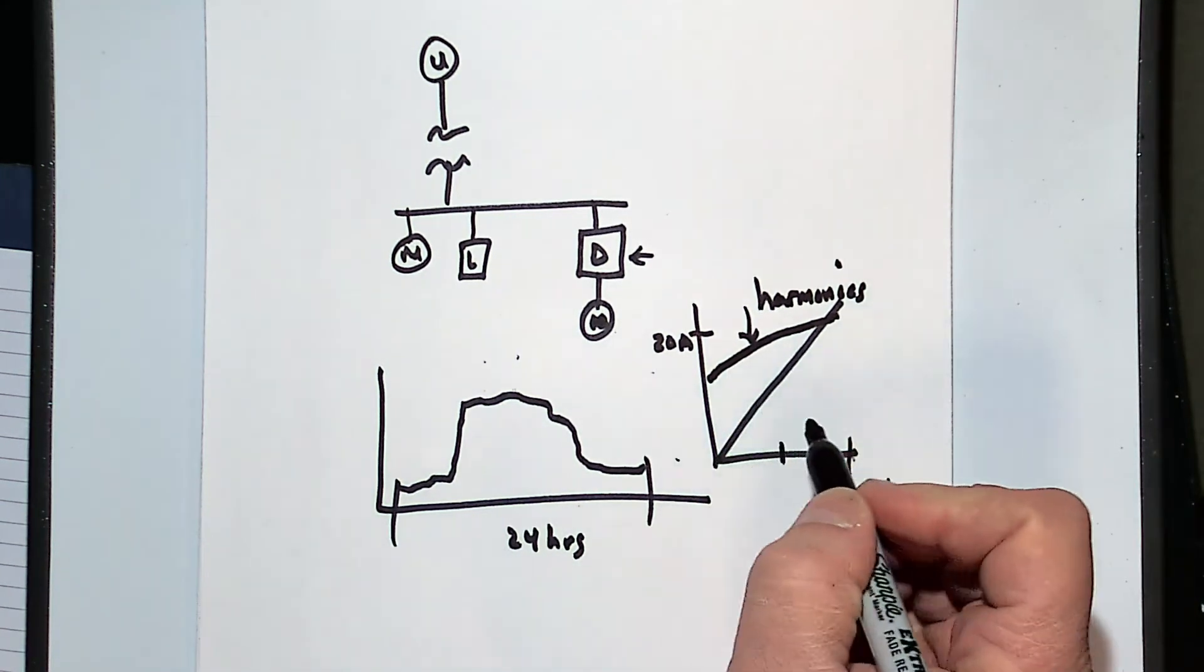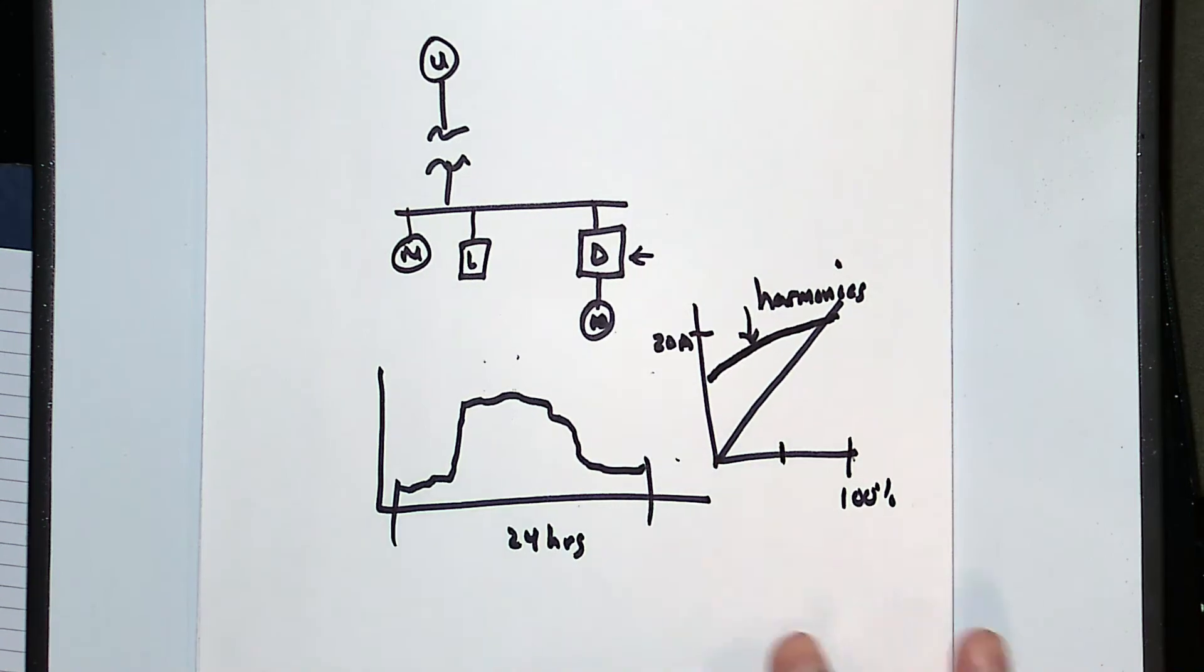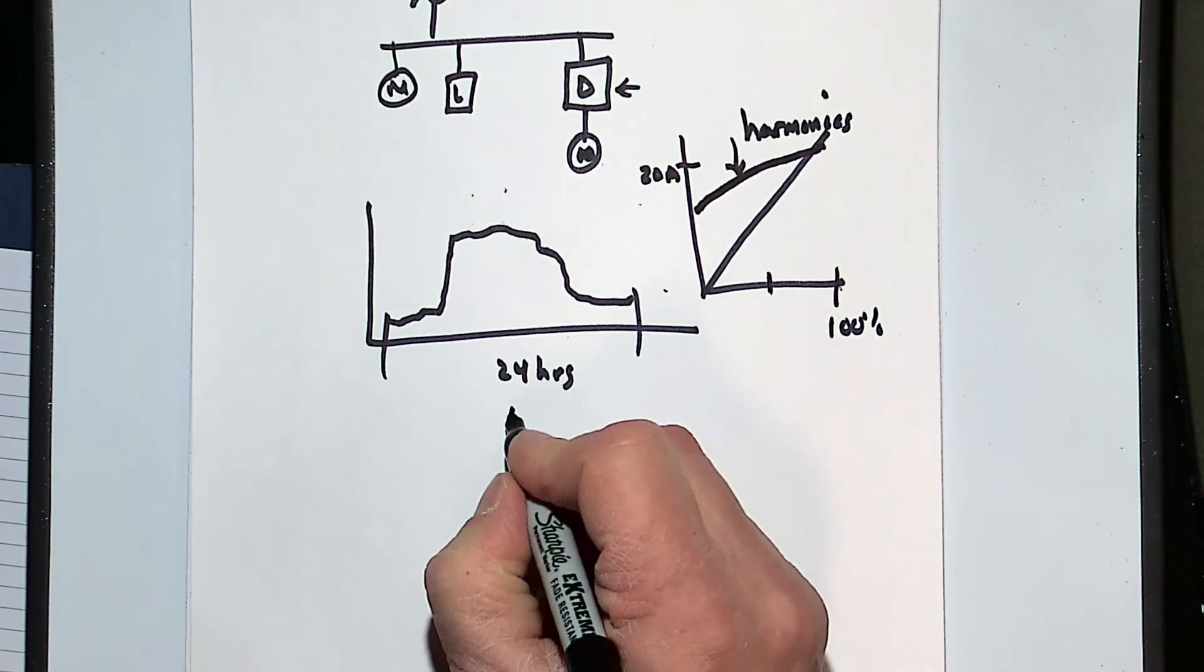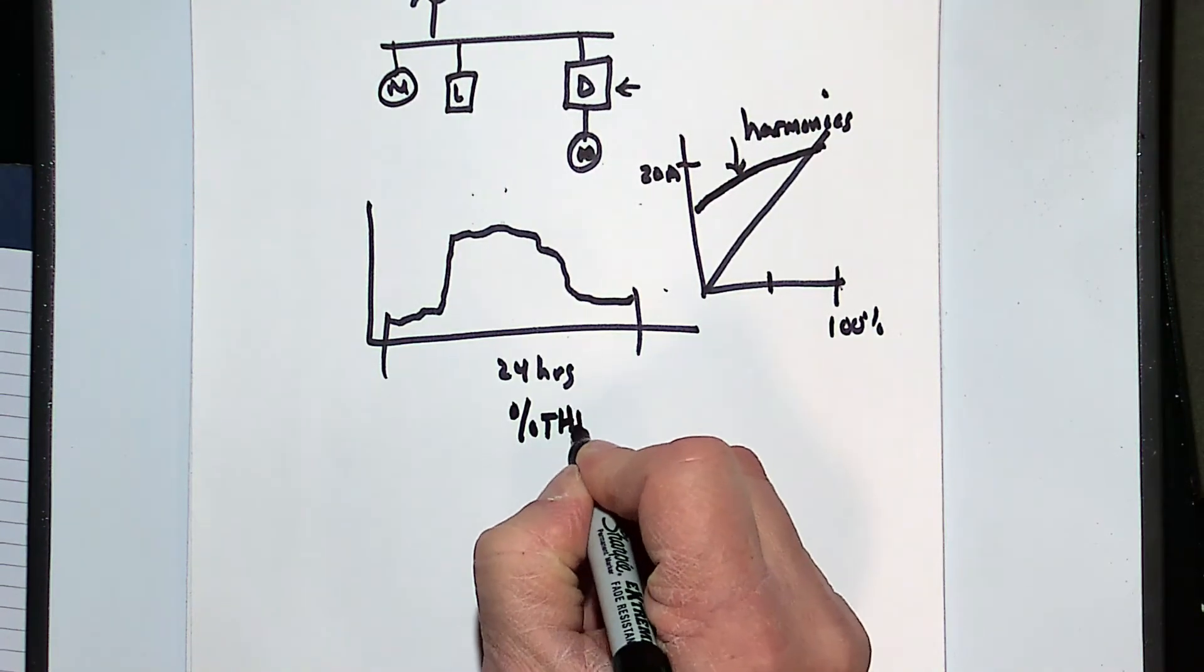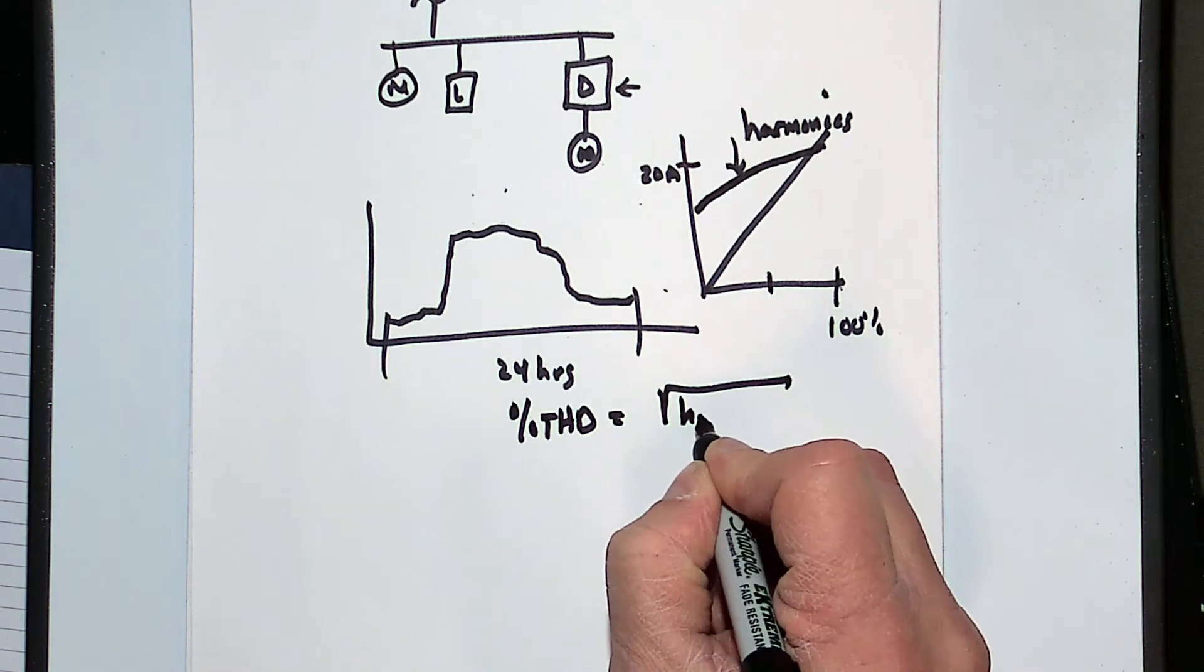And so what happens is at a very light load, my harmonics are very high. And so again, comparing that proportionally to the 60 hertz, because our percent THD is based on the square root of the sum of the squares of all the harmonics...